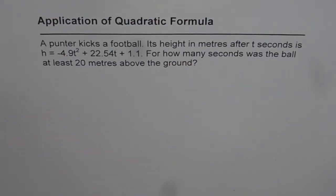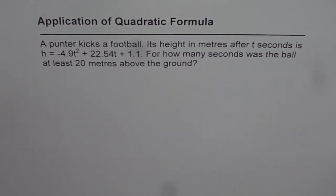Application of quadratic formula. A punter kicks a football, its height in meters after t seconds is h equals minus 4.9 t squared plus 22.54 t plus 1.1. For how many seconds was the ball at least 20 meters above the ground?